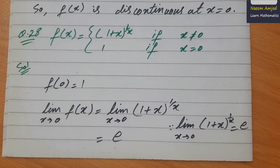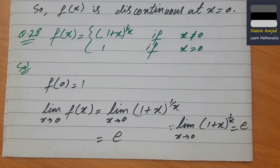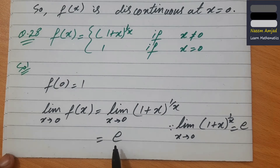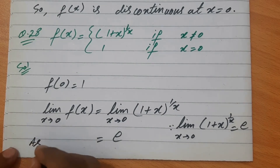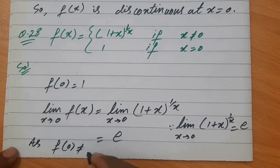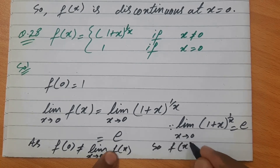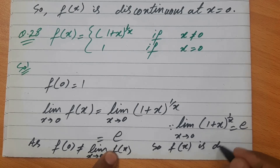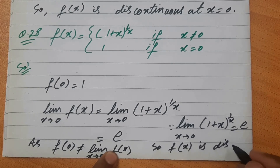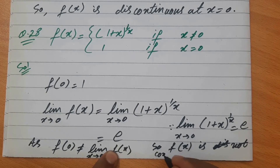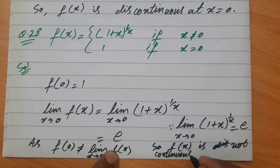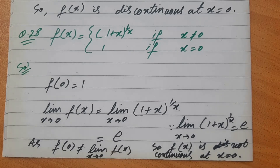Function का defined value 1 है और limit = e है — यह दोनों equal नहीं हैं। इसलिए f(0) ≠ limit x→0 f(x)। So f(x) is discontinuous (is not continuous) at x = 0।